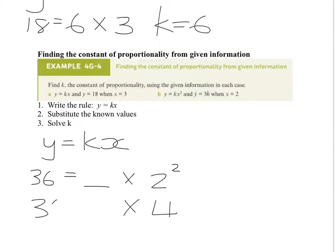Times something gives us 36, well, that'll be 9, wouldn't it? So, we say, k is equal to 9.